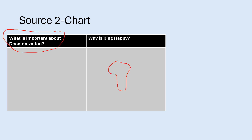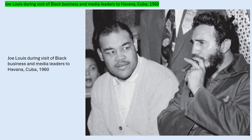What is important about decolonization and why is King happy? King is happy because Africa is getting away from the rule of Europe and will now be Africa for the Africans. What is important about decolonization is that Africans will be able to govern themselves. Here we have another required image for the AP framework — Joe Lewis next to Fidel Castro. Castro is significant because he led a communist revolution in 1959 and advocates for the proletariat. They're starting to make a connection between the proletariats of the nation and the proletariats of the world, arguing that there is a global bourgeoisie as well as a global proletariat.